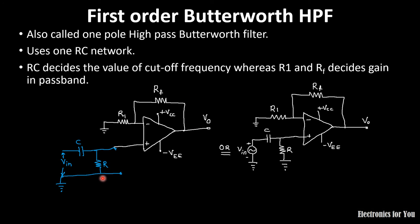This circuit can be redrawn in an equivalent form — both representations are one and the same thing. Here the input is grounded, and therefore this resistance is also connected to ground directly. We are measuring the output voltage and we need to calculate the gain for the filter.